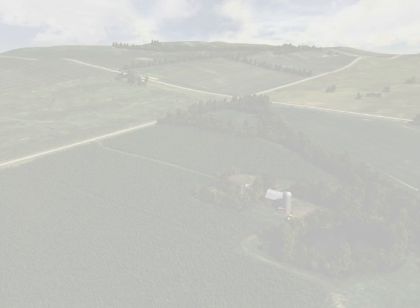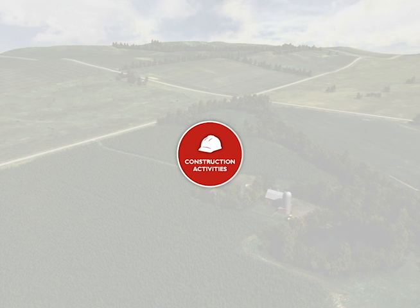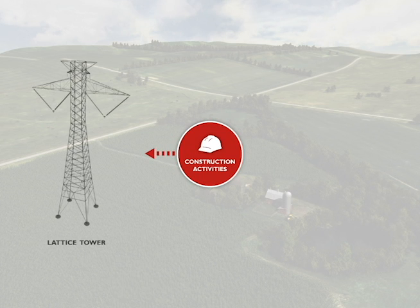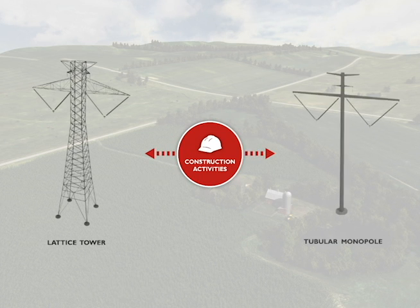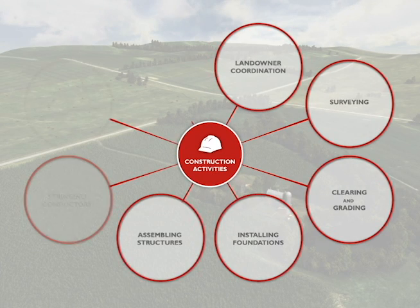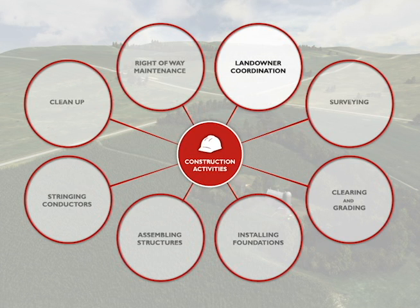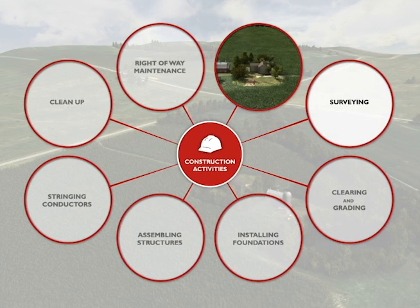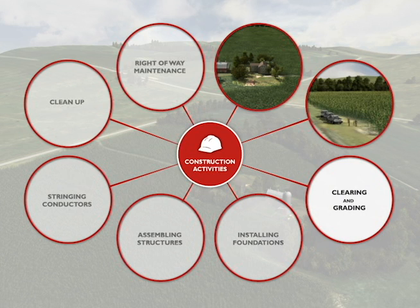The purpose of this video is to explain the construction activities associated with the construction of both lattice and tubular monopole transmission towers. These activities include engaging and coordinating with landowners, surveying the transmission centerline, work areas, and other features, as well as clearing and grading for the right-of-way and structure sites, and any access roads and equipment staging areas that are needed.